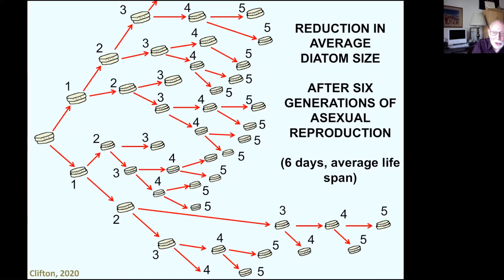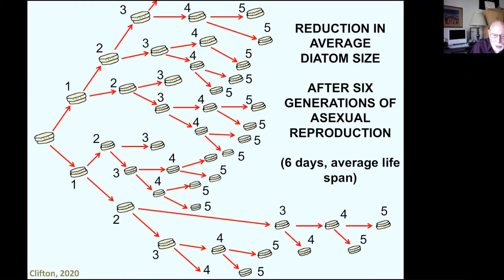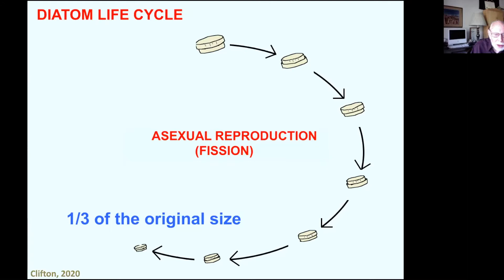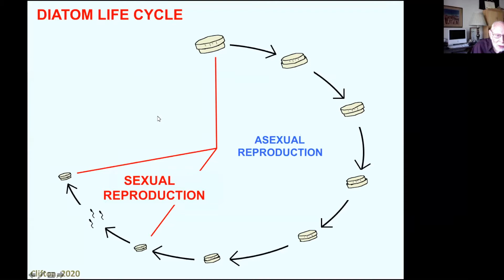So do they just keep getting smaller until they disappear? Nope. When they get to about a third of the size of the original diatom, they switch from asexual fission to sexual reproduction, producing sperm that swim and seek out ova emitting pheromones. They unite, form a new organism that grows inside the old valves, eventually casts them off, and continues to grow inside an expanding sphere that ultimately ruptures — producing a diatom the size of the original.